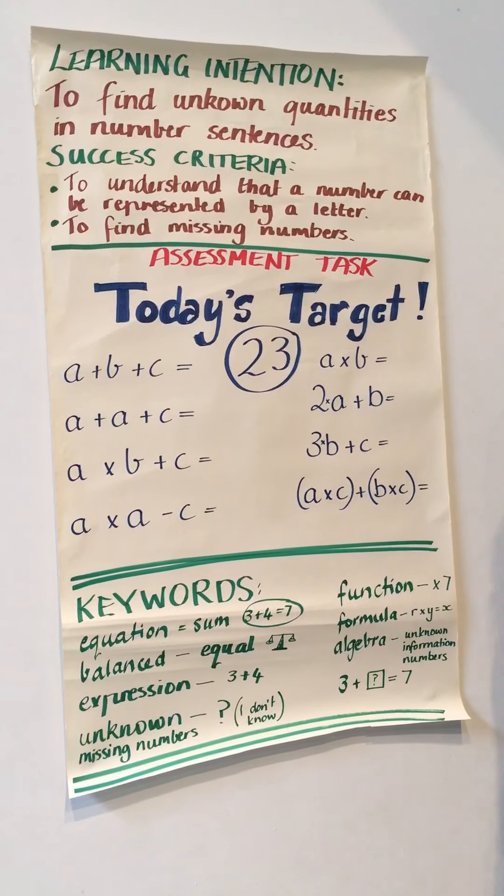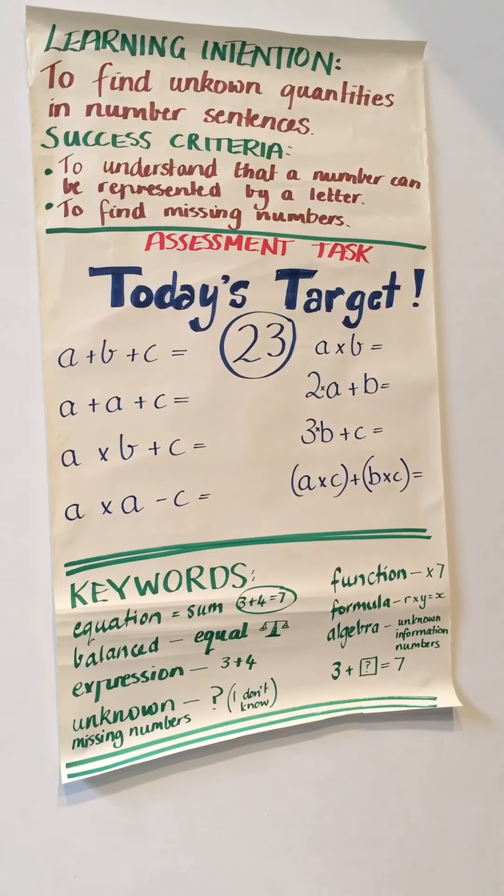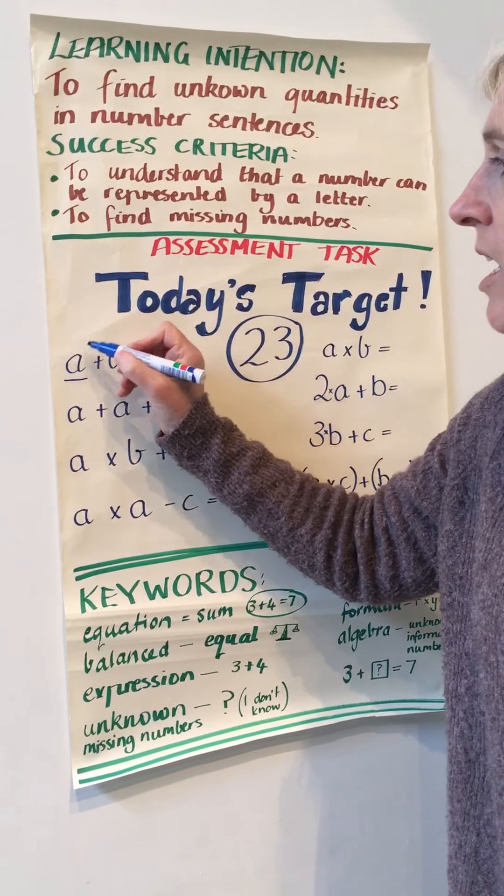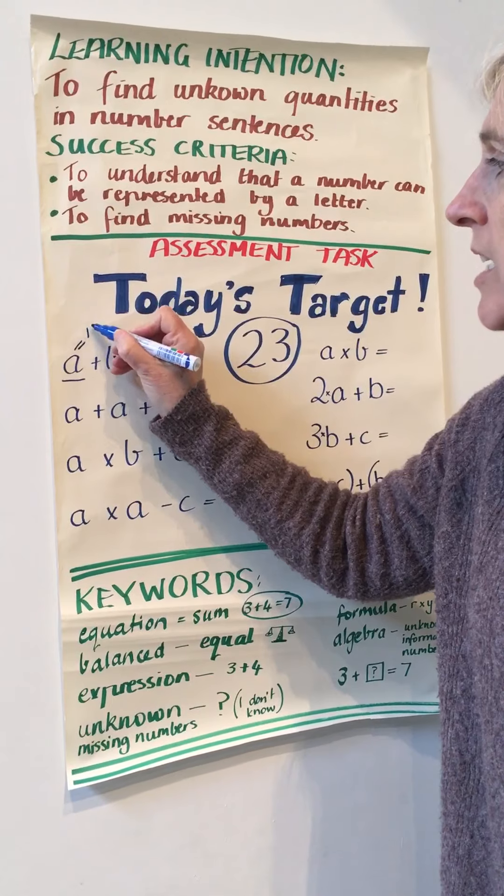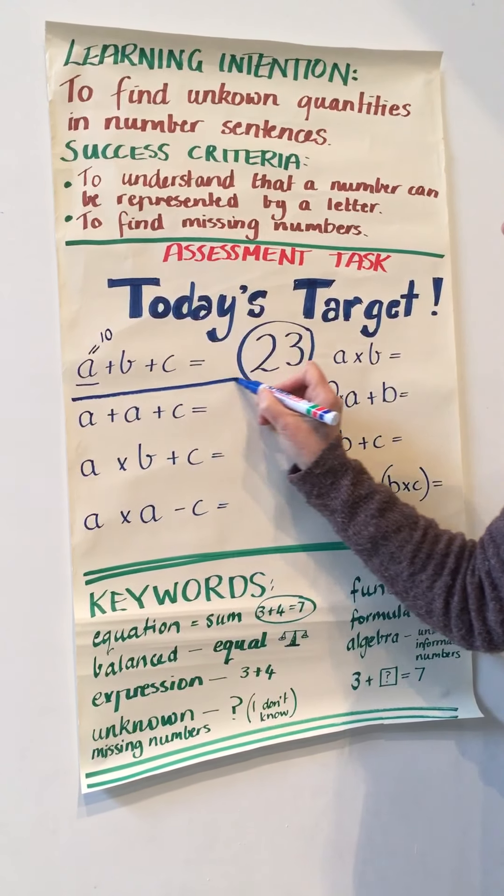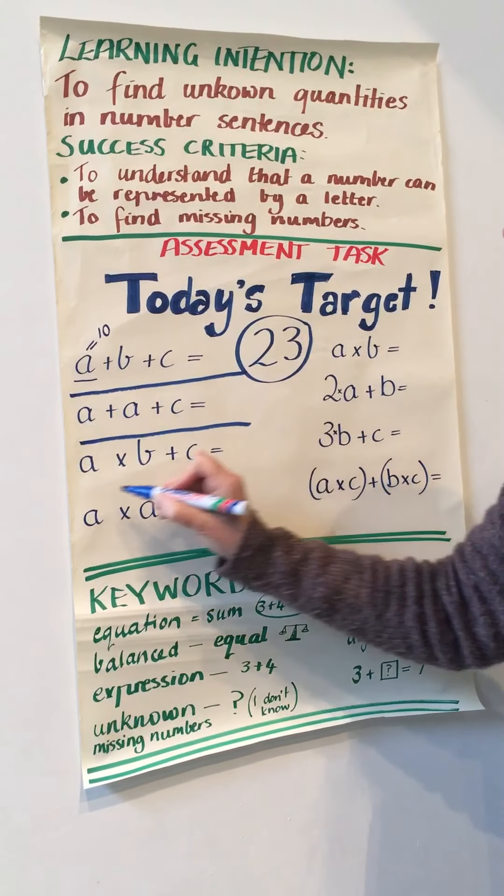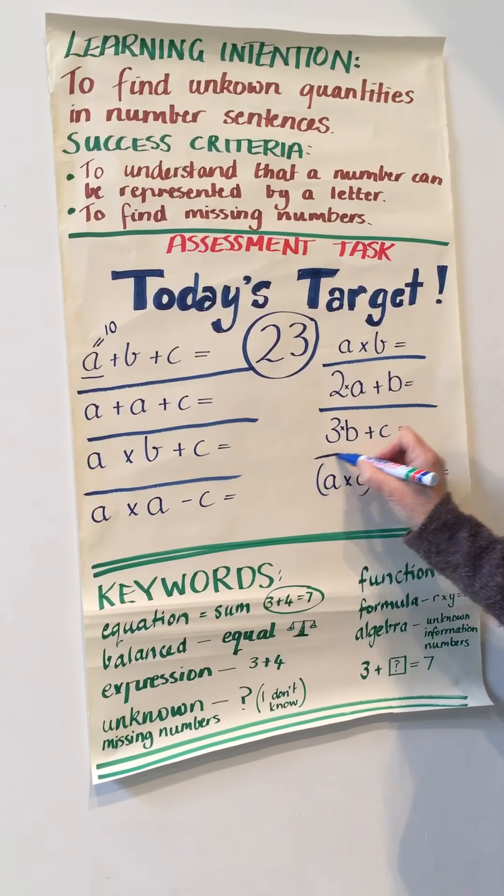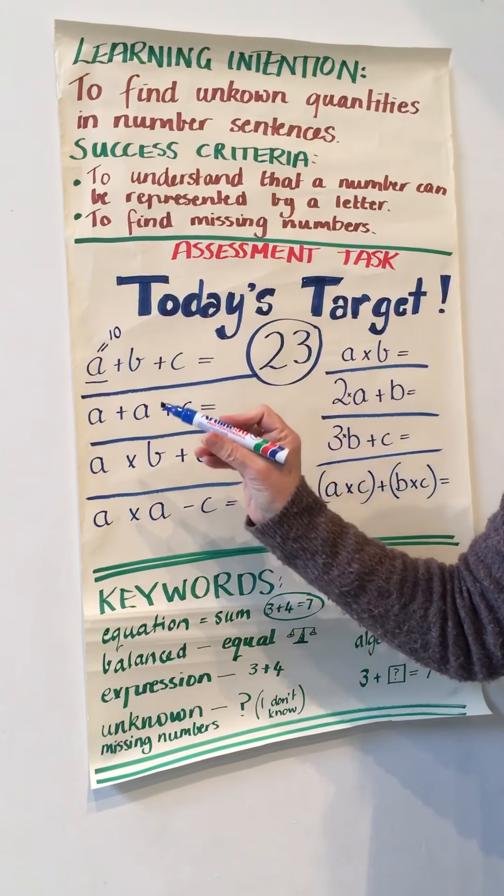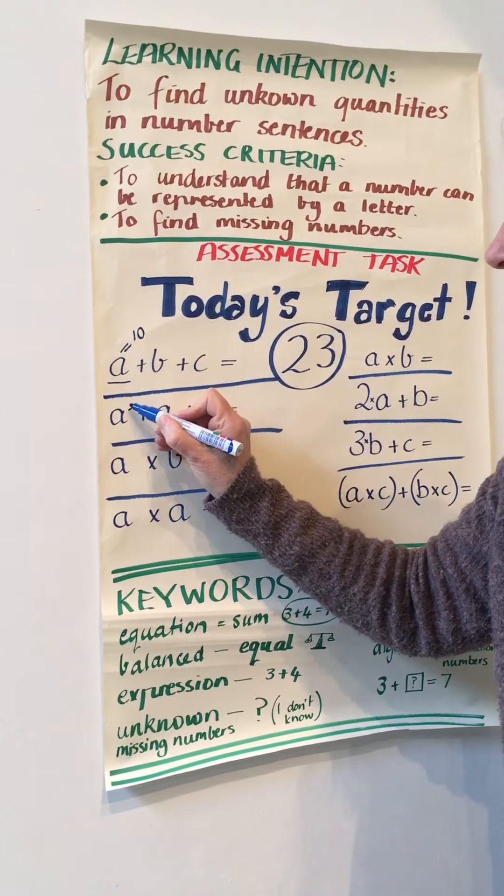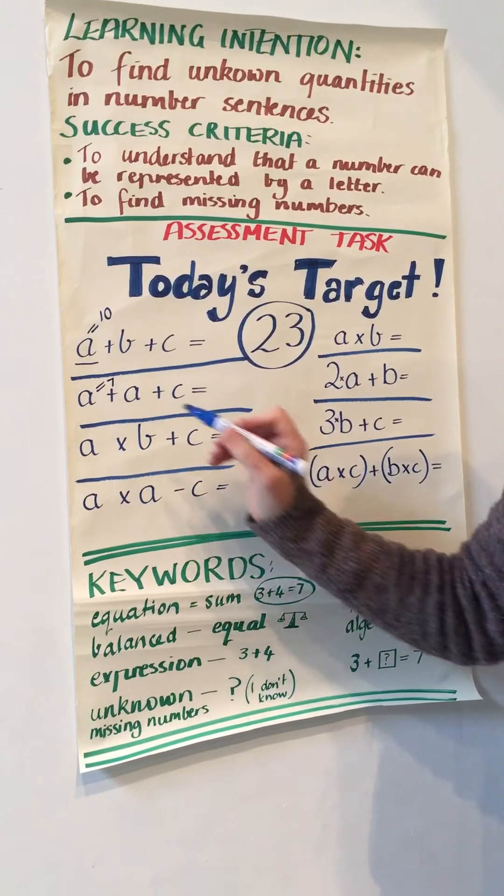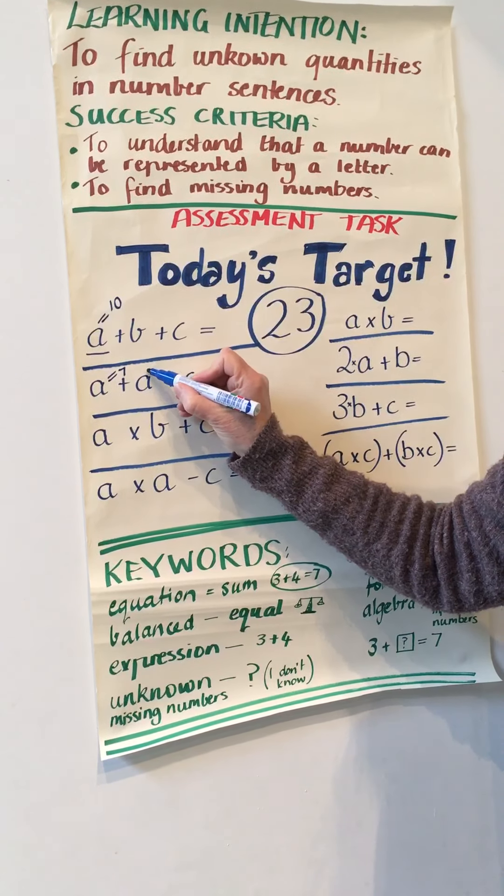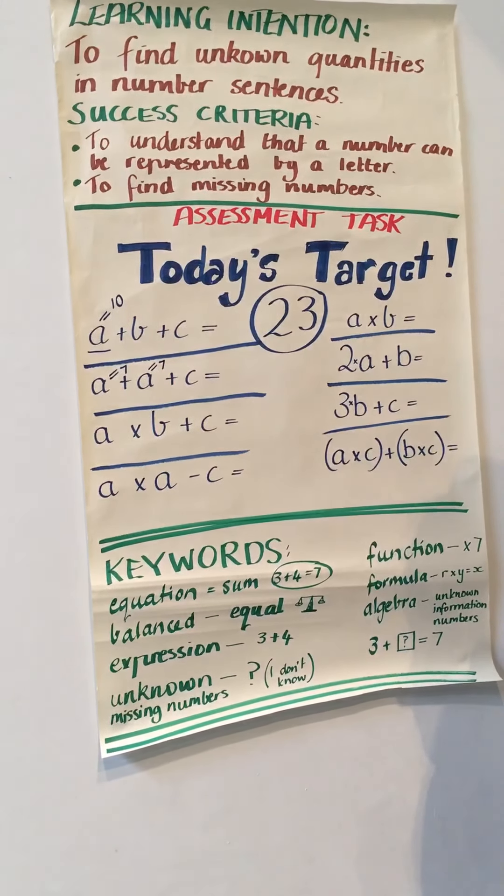The only thing I want to say to you is just because an A up here you decide that the A is going to equal 10, the next equation is a completely different one. The A doesn't have to equal 10 in all of them. Each of them are independent of each other. So in the next one your A could equal 7. However, if you've got another A in the number sentence, that has to equal 7 as well.